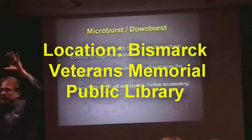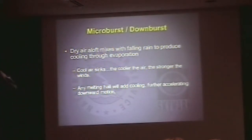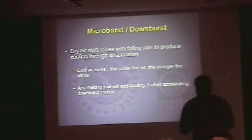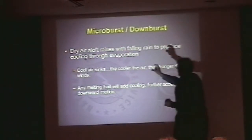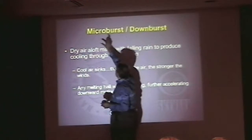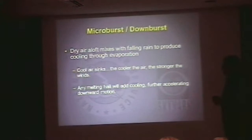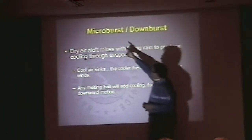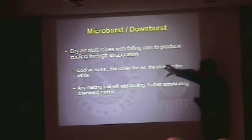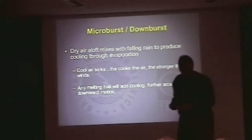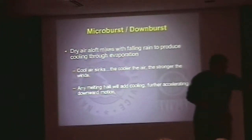Cold air doesn't want to stay up there — it's heavy, more dense, and it wants to sink. So this cold pocket of air rushes down to the ground. It's called a downburst or microburst. A microburst occurs over a very small area. A downburst is more general — any sinking air. If this is happening in a thunderstorm, we're accelerating the downdraft. The downdraft may be 80 miles an hour, and now we're adding another 15 miles an hour to it.